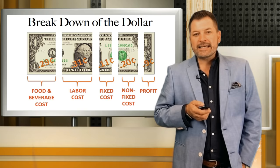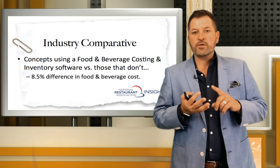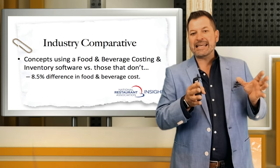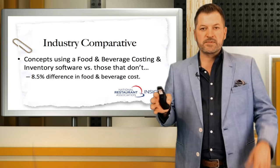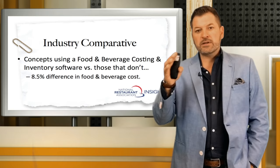Food is typically the biggest culprit robbing our profitability, and the big concepts know this. An interesting statistic from the NRA and Deloitte: restaurants using some type of inventory and food and beverage cost control system typically have an 8.5% reduction in food cost over those who don't. So immediately, if we're looking at why big national brands are twice as profitable as the average independent, we can probably look right here.